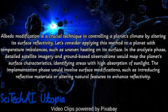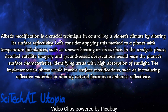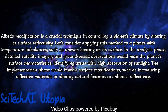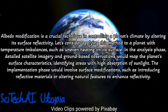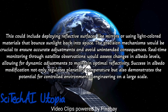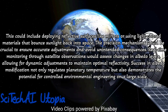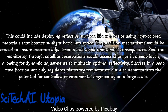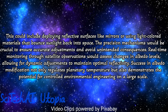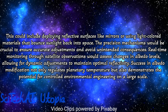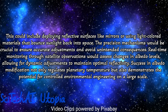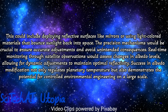Method 7: Albedo Modification. Conduct a comprehensive analysis of the planet's surface characteristics, including reflectivity or albedo of different materials such as rocks, ice, and vegetation. Develop a surface modification strategy to alter the planet's albedo, either by introducing reflective materials or changing the properties of existing surfaces. Deploy automated systems or robotic missions to implement surface modifications, considering energy efficiency, scalability, and the long-term stability of altered surfaces. Utilize advanced modeling and simulation tools to predict the impact of albedo modifications on temperature, climate, and overall habitability, and implement a monitoring network to assess effectiveness.